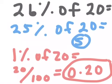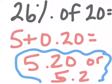Now, my last step is to add them together. So my 25% was 5, my 1% was 20 hundredths. Once I add them together, I get 5 and 20 hundredths or 5.2. Those are both equivalent.